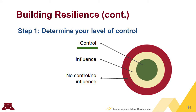The innermost circle contains things you have the most direct control over: your behaviors, your actions, how you work, and your responses to adversity and opportunity. As a supervisor, you have great opportunities to coach your employees to focus on things they can control directly and indirectly.